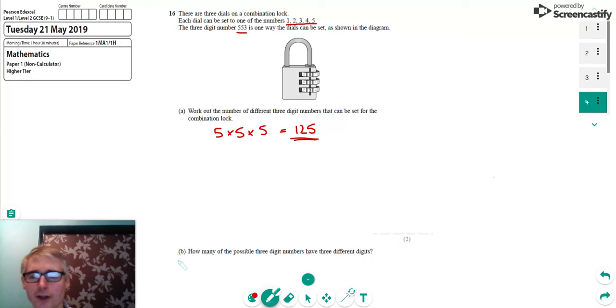The second part asks how many of the possible three-digit numbers could have three different digits. So by that we mean 5, 5, 5 wouldn't count, that would be no good. But 1, 2, 3 is an example where each of the dials has a different number, so that would be okay.